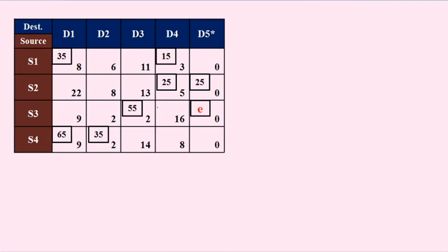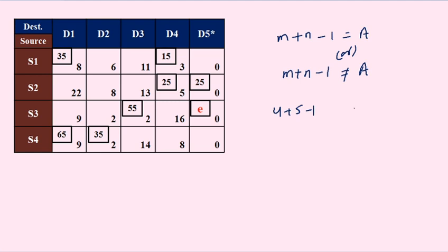The final form of the table now has values: 35, 15, 25, 25, 55, Epsilon, 65. Now checking degeneracy or non-degeneracy: m plus n minus 1 — 4 plus 5 minus 1 equals 8, and the number of allocations are now 8. Since 8 equals 8, it is non-degeneracy. We have successfully converted the degeneracy problem into non-degeneracy. Now we can apply the Modi method, Stepping Stone method, or Vogel's approximation method for the optimal solution.